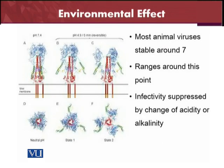Most animal viruses are stable at pH 7, which is in the neutral range. They are quite capable of producing infectivity at this range. Infectivity is suppressed by changes in acidity or alkalinity. If the pH increases, infectivity decreases, and if the pH decreases, infectivity is also affected and reduced.